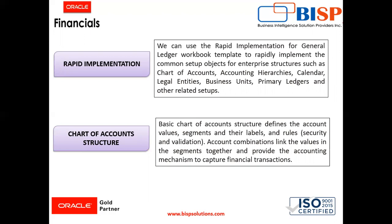Moving further comes the chart of account structure. The basic chart of account structure defines the account values, segments, their labels, and rules relating to security and validation. Account combinations link the values in the segment together and provide the accounting mechanism to capture financial transactions. The chart of account structure defines the number and attributes of various segments, which can include the order of segments, its width, prompt, segment levels, and other details relating to the segments of the COA structure.